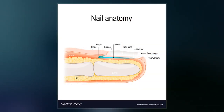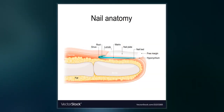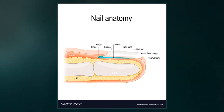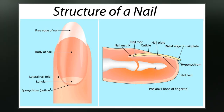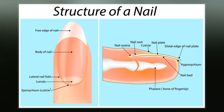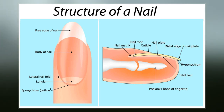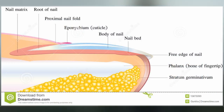The nail consists of the nail plate, the nail matrix and the nail bed below it, and the grooves surrounding it. The matrix, sometimes called the matrix unguis, keratogenous membrane, nail matrix, or onychostroma, is the tissue which the nail protects. It is the part of the nail bed that is beneath the nail and contains nerves, lymph and blood vessels.